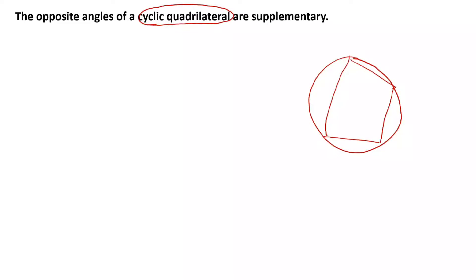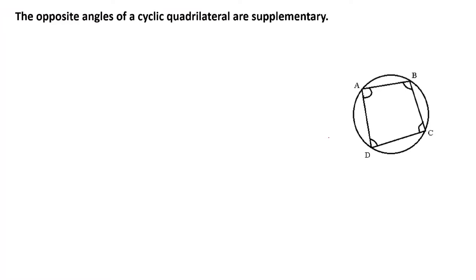You can see here we have a quadrilateral and all four corners are on the circle. We have quadrilateral ABCD which is a cyclic quadrilateral. So in the given, we write that quadrilateral ABCD is a cyclic quadrilateral.